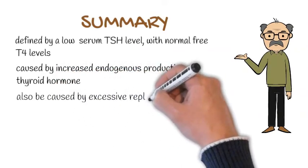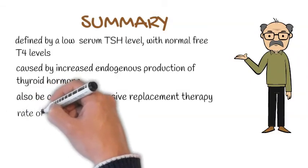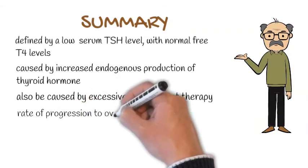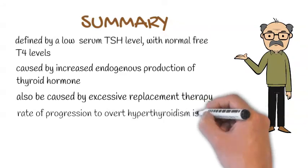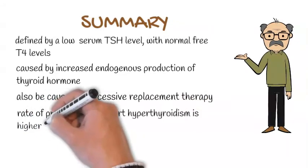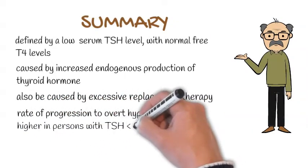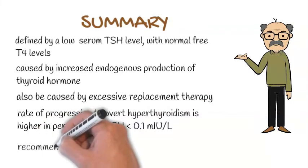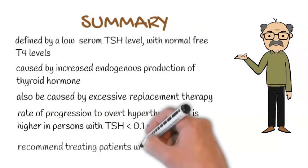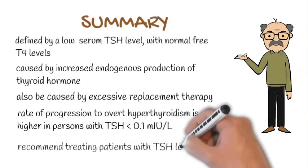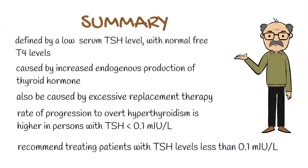The rate of progression to overt hypothyroidism is higher in persons with TSH levels less than 0.1 mIU per litre. Current guidelines recommend treating patients with TSH levels less than 0.1 mIU per litre if they are older than 65 years or have comorbidities such as heart disease or osteoporosis.